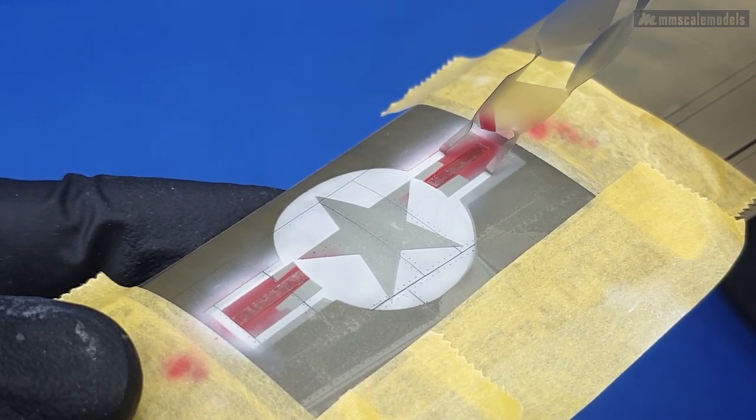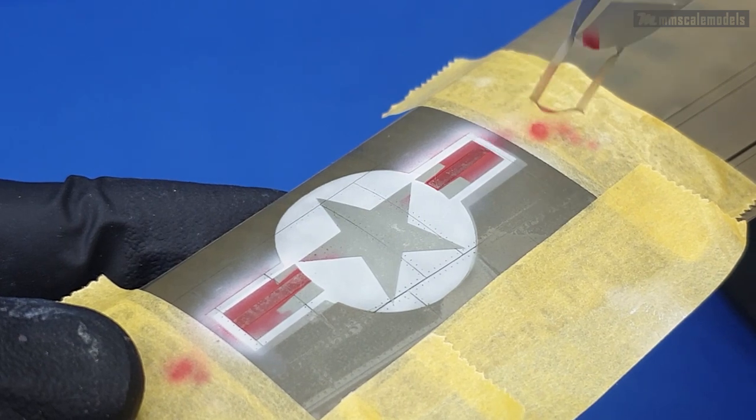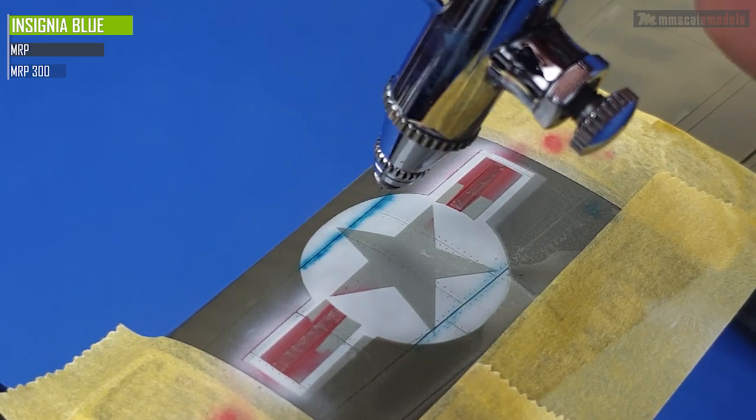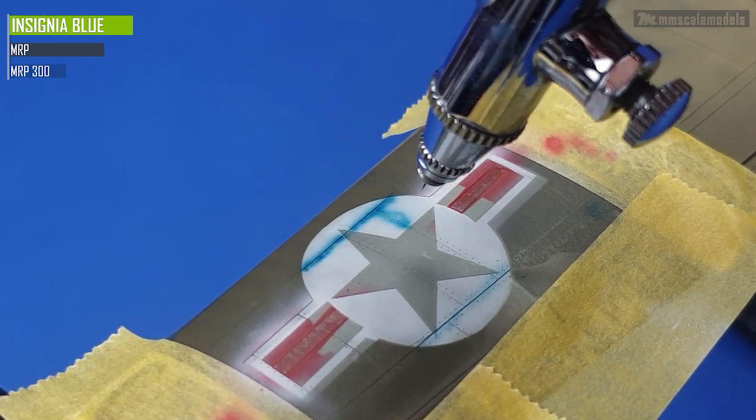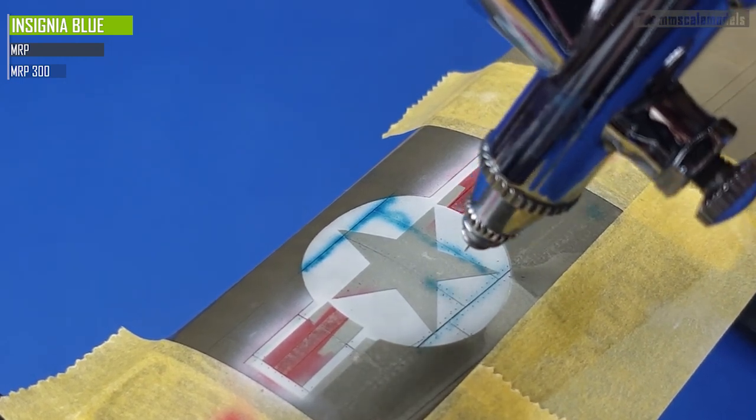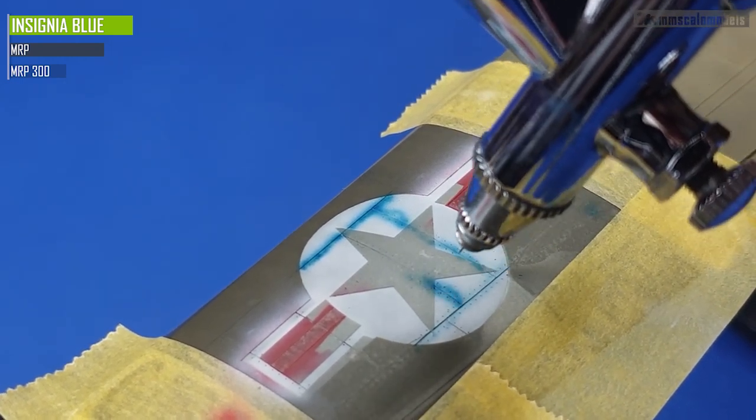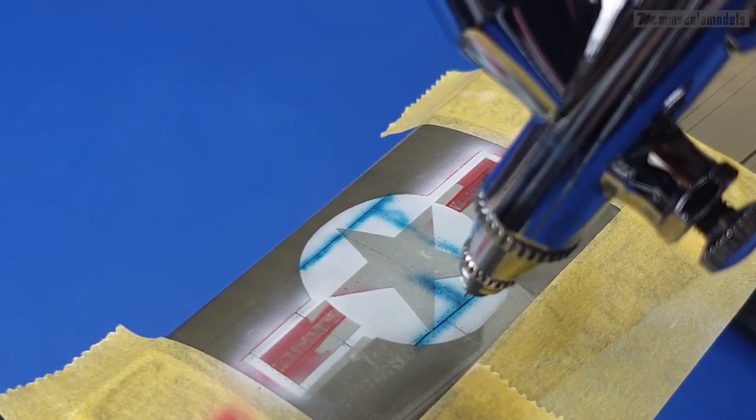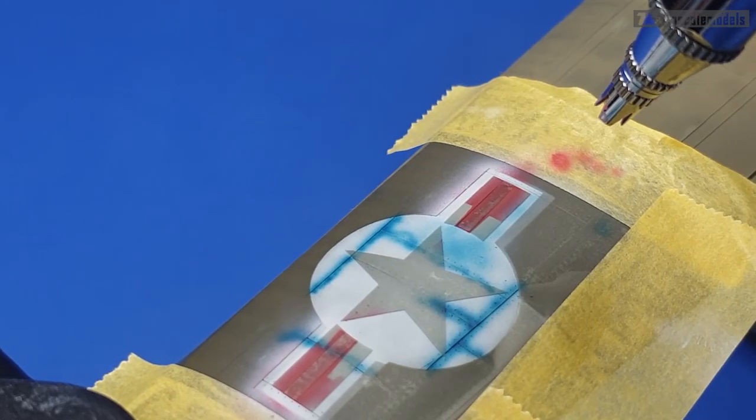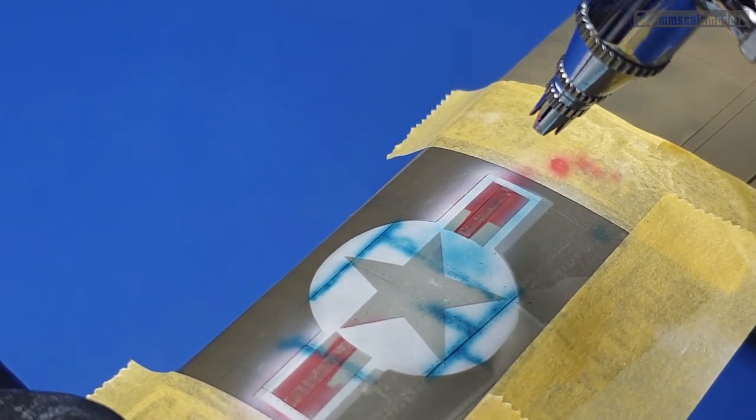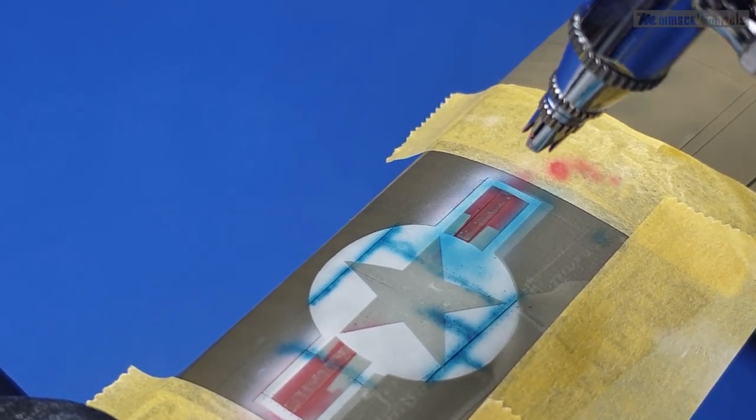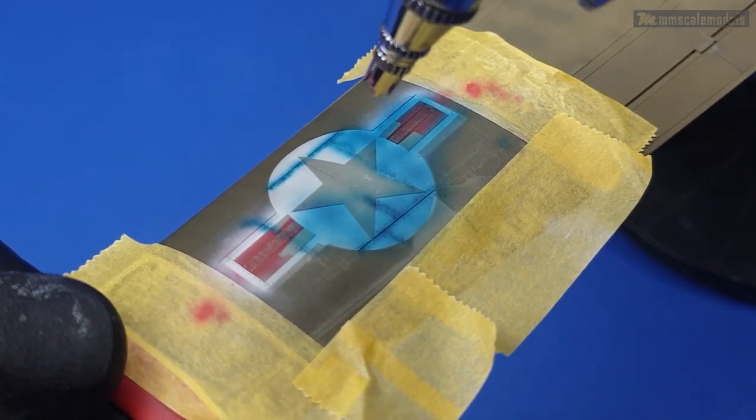And now we can paint. First I am going to do something like pre-shading, going over the panel lines. And the paint I am going to use is, surprise surprise, Insignia Blue from MRP. And this should be matching FS15044 or ANA502, so I guess this should be the correct color.